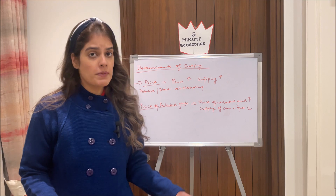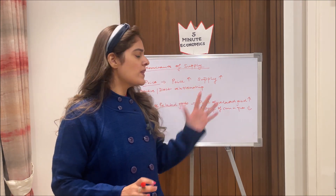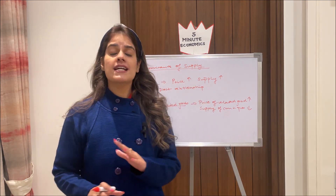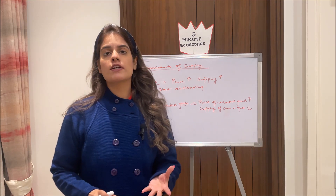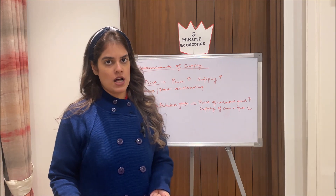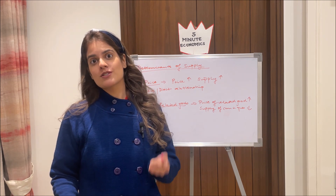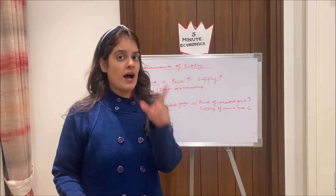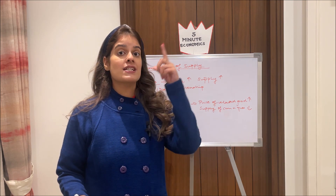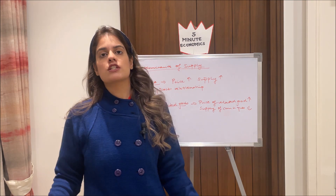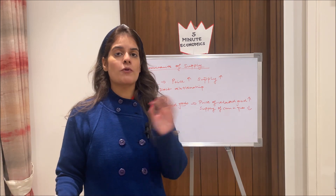Secondly, the price of related goods — which can be substitute or complementary goods. When the price of a related good rises, the supply of the commodity in question falls. Why? Because it is more profitable for the producer to sell the commodity which is more highly priced. So the supply of the related good rises, whereas the supply of the commodity in question falls. The vice versa happens when the price of the related good falls.